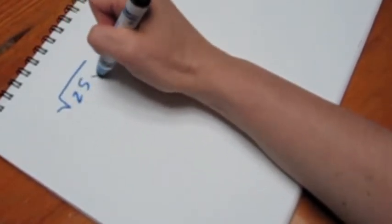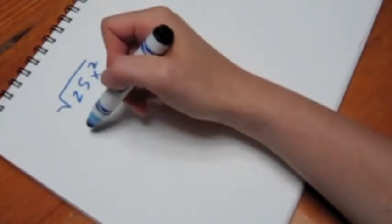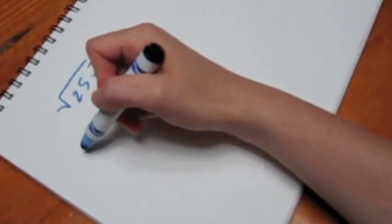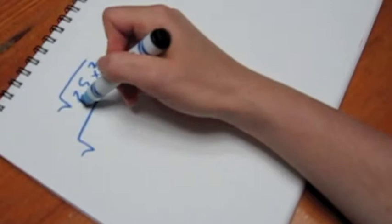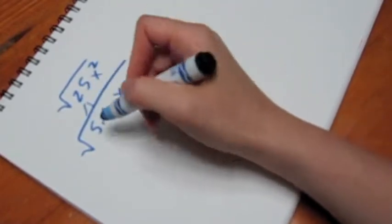When we look at our radical and what's under it, for example, we have the square root of 25x squared. When we're looking for a square root, what is it that is squared in this number? We know that if we break down 25, it's the same as 5 times 5, and x squared is x times x.